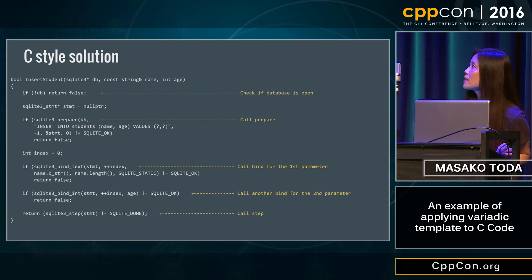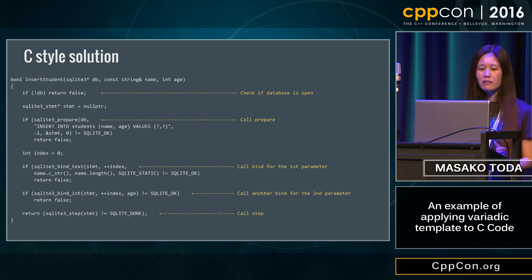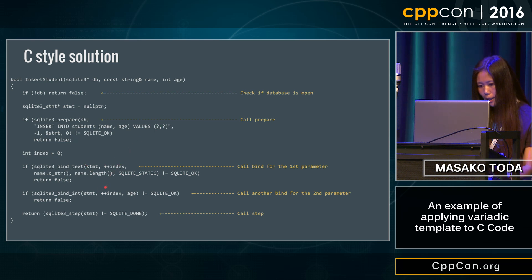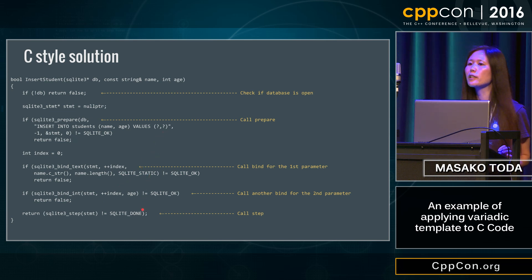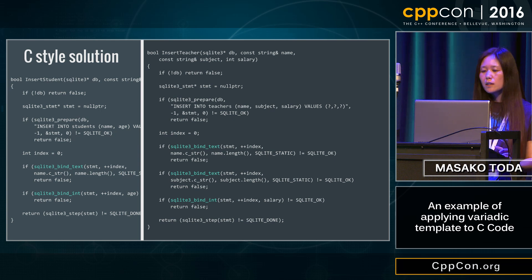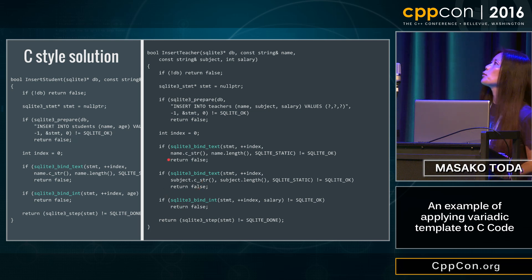Here's the C-style solution — I just use the SQLite API directly. Check if the database is open, call the prepare function, call the bind function for the first argument, call another bind function for the second argument, and finally call the step function. It's super straightforward. Pretty much the same for the teacher's table, except the teacher's table has three columns, so I had to call the bind function three times.